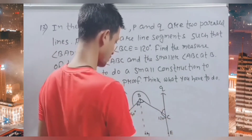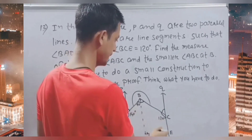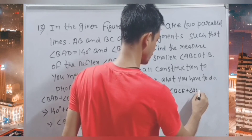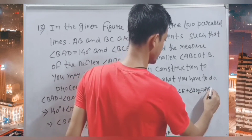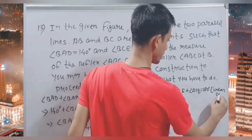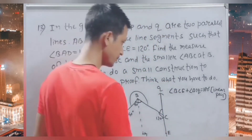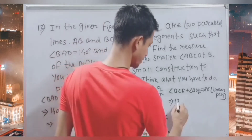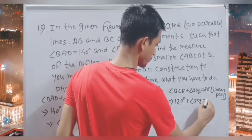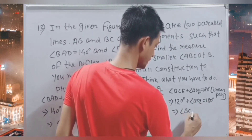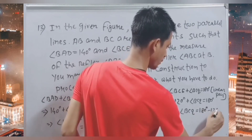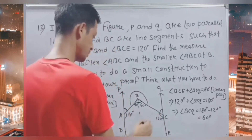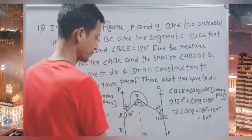Taking the other part, linear pair at C: angle BCE plus angle BCQ equals 180 degrees. Angle BCE is 120 degrees, so angle BCQ equals 180 minus 120, which is 60 degrees. By alternate angles, angle CBN is also 60 degrees.